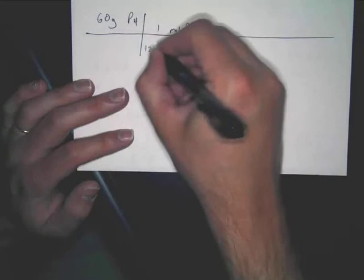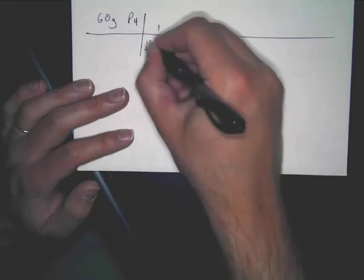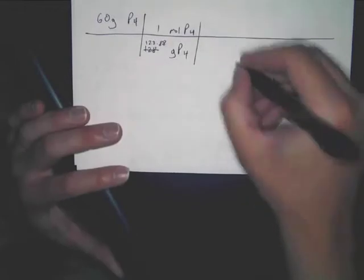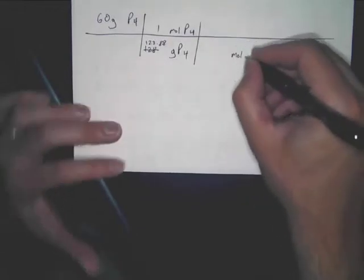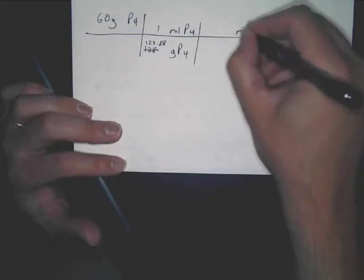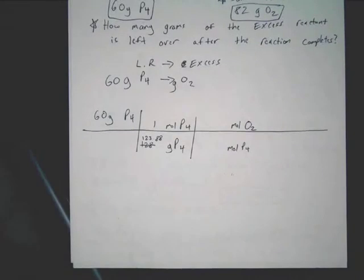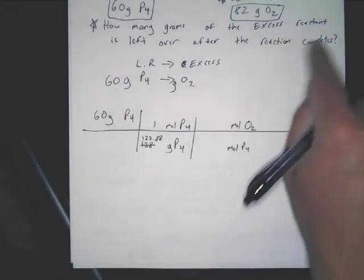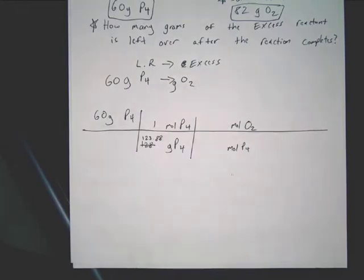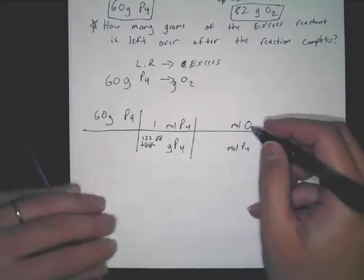Our molar mass, that didn't change for P4. If it adds a question like that, then would you even need to do the limiting reactant? Because it would tell you that P4 is limiting reactant. Yeah, but the way I worded it, I know, but the way I worded it, it didn't tell you that. It says how many grams of the excess reactant is left over. And they do that on purpose, so that you don't know which one is limiting. Now, you look here, you say, okay, I've got moles of O2, moles of P4.